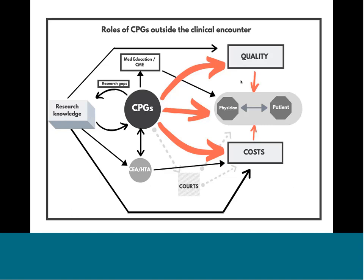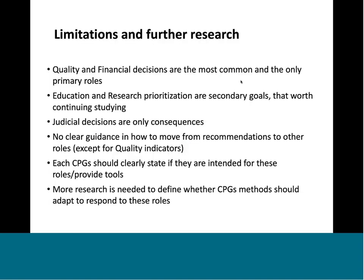Regarding limitations and further research: quality and financial decisions are the most common and primary roles outside the clinical encounter. Education and research prioritization we consider secondary roles that will require further study. Judicial decisions are only a consequence and should not be considered a core role of guidelines. There is no clear guidance on how to move from recommendations to many of these roles, except for quality, which is a field that has had some interest and research in the last decade. Each guideline should clearly state if it is intended to be used in these roles, or provide tools to help guidelines be used in them.